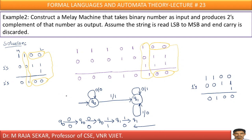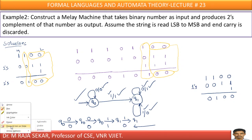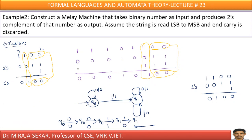How can I model this into a Mealy machine? In state Q0, on input zero, if you come across any number of zeros, just print zero. If you come across the first one, print one — the output must be one. From here onwards in the next state, if I come across zero I must print one, and if I come across one I must print zero. This is the Mealy machine for the two's complement of a given number.